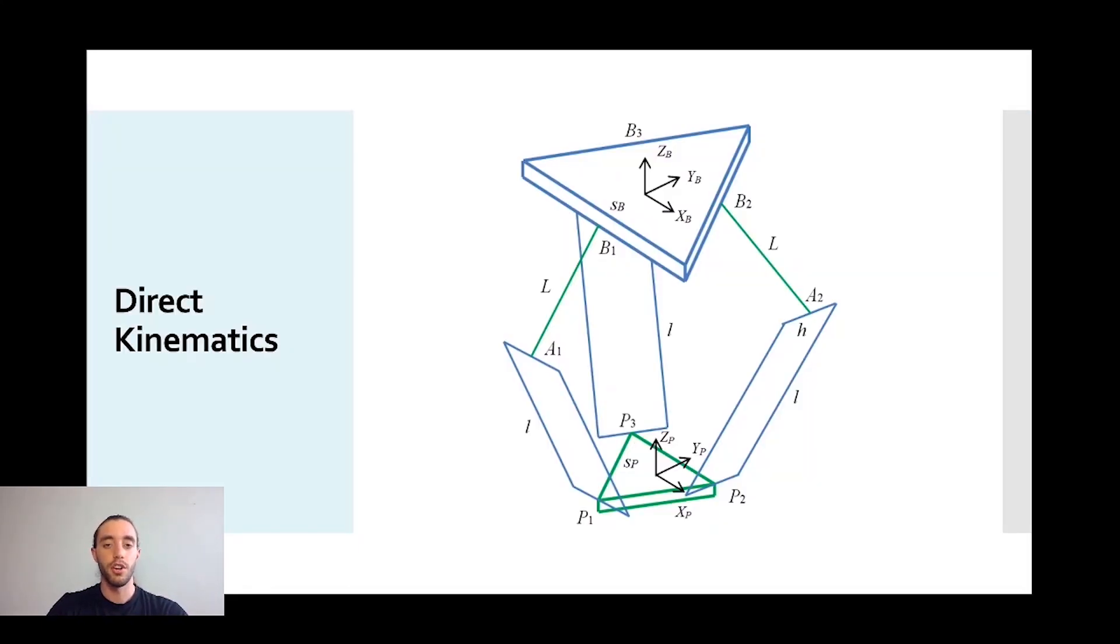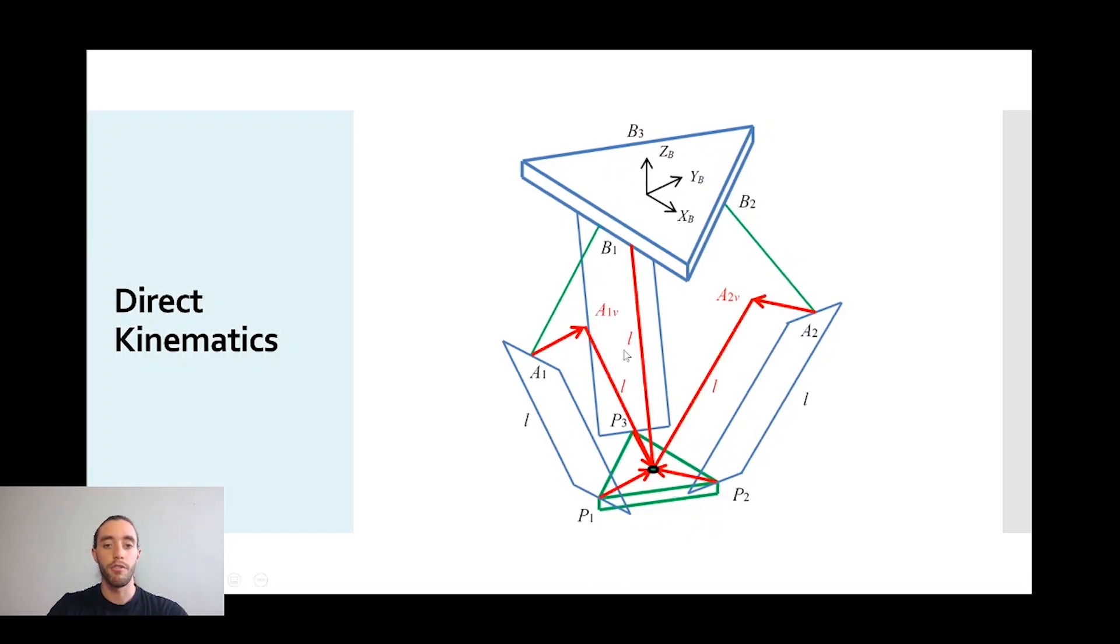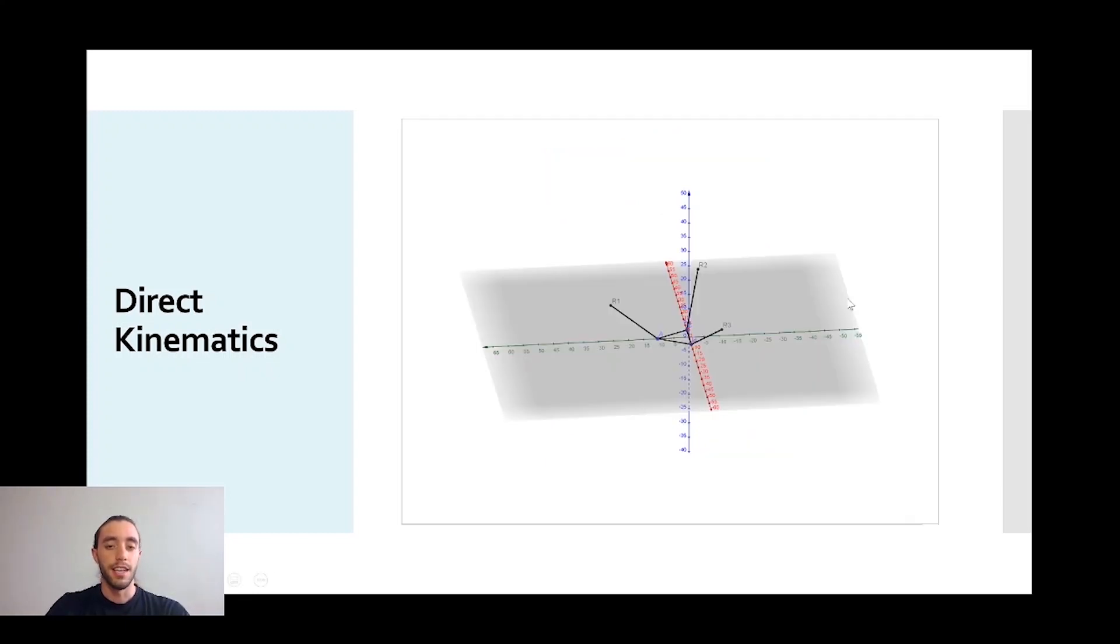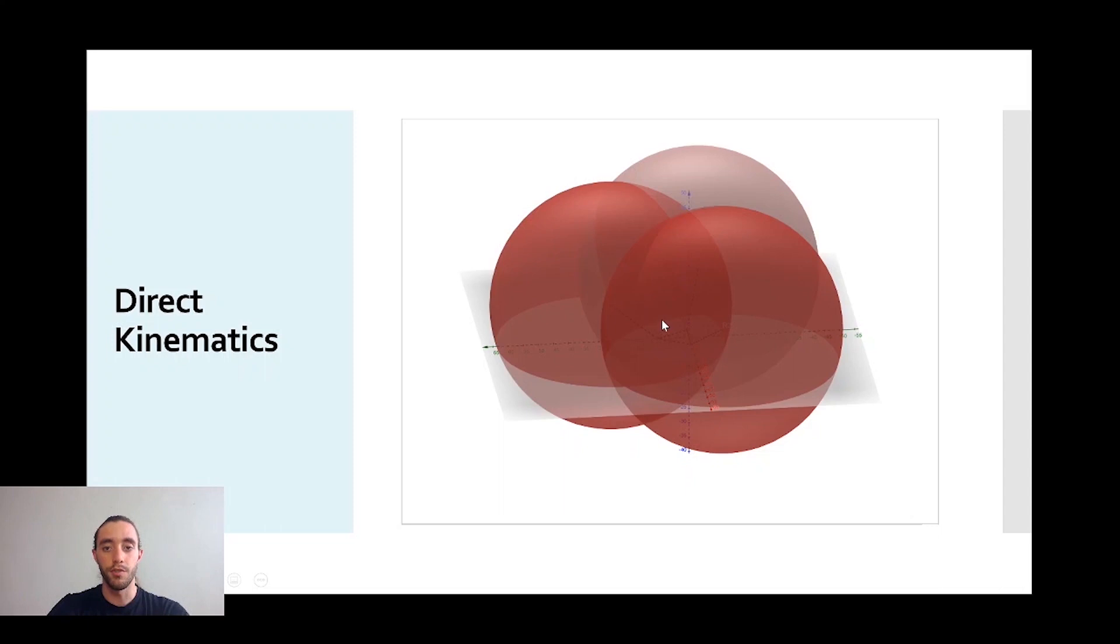Knowing the three joint angles, we can compute the elbow points A1, A2 and A3. And since the end effector platform orientation is always constant and horizontal, we can define three sphere centers. And then constructing in each center a sphere with the radius equal to the lower arm length, then the solution to the problem will be given by the intersection of the three spheres.